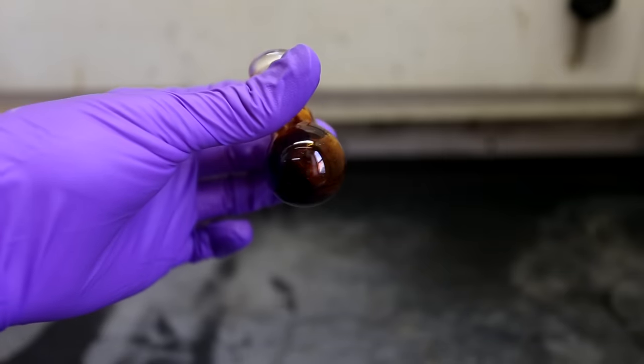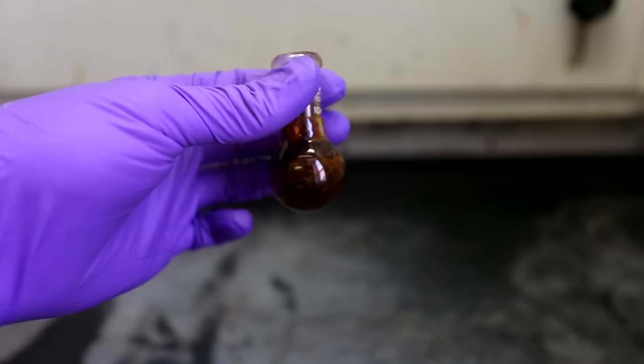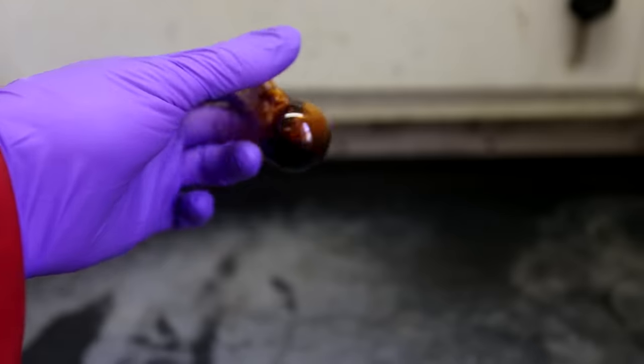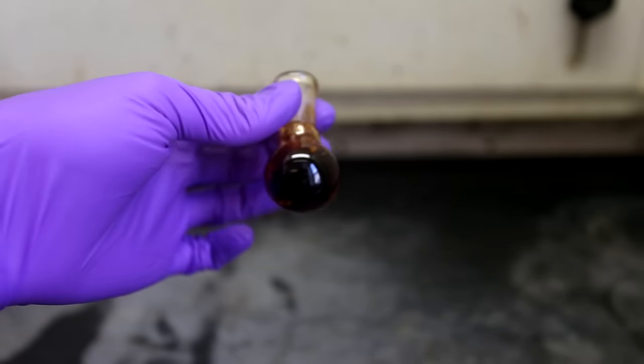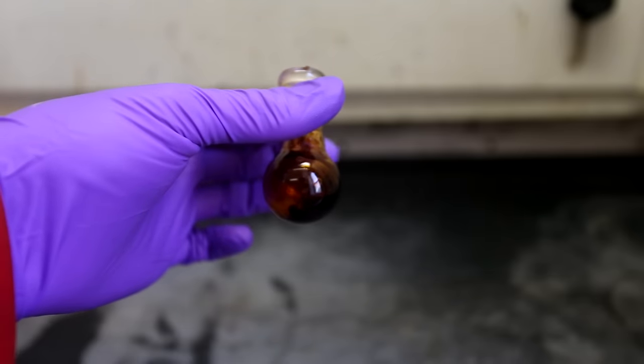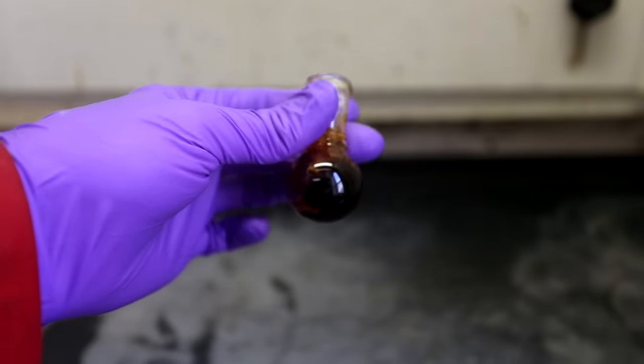I continued rotovaping the extract in a small 10 milliliter round bottom flask. I was left with a red viscous goop. The extract is red due to the presence of an abundant amount of beta carotene. This is an extremely strong capsaicin extract and should be handled with care.